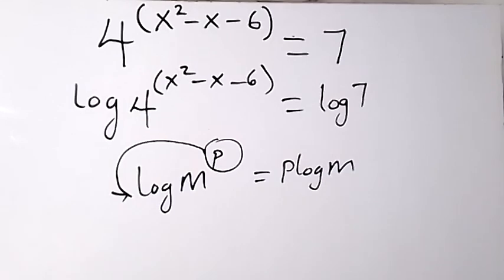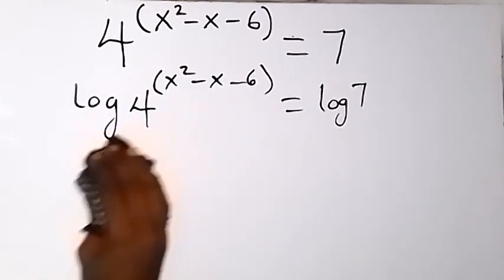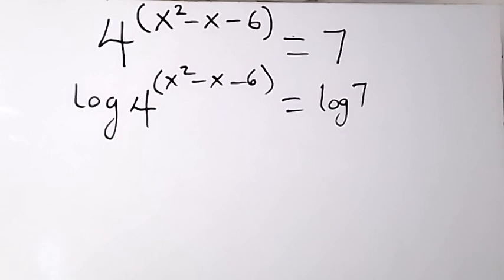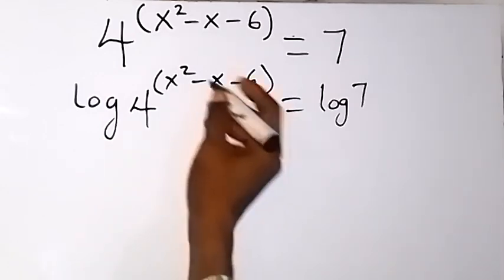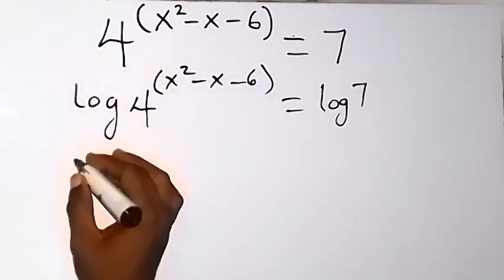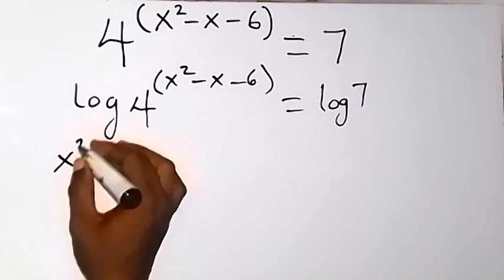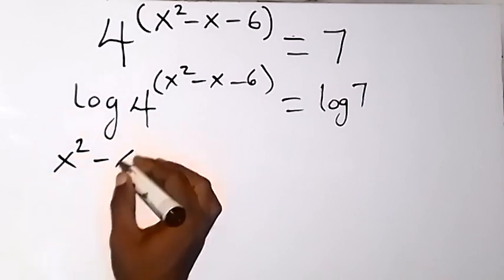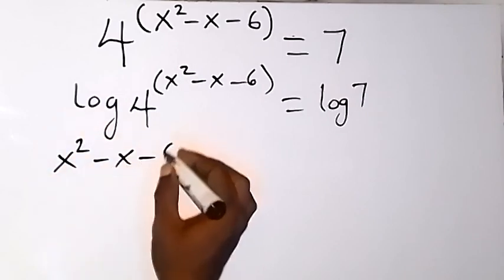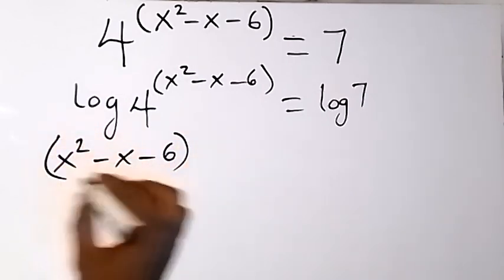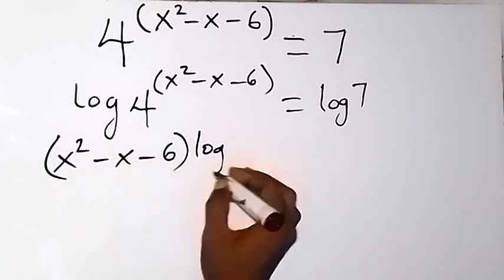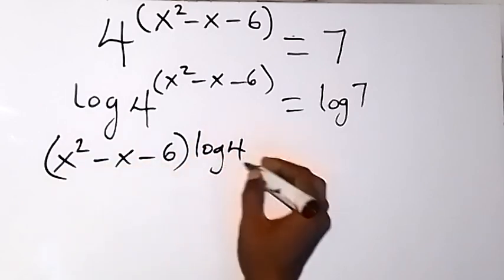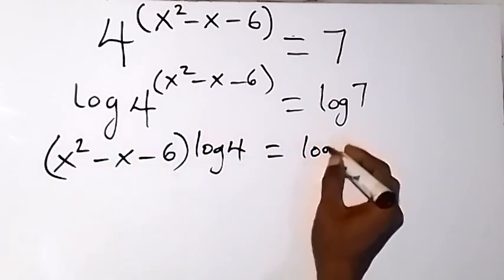When we apply the power law here, this power — that is x squared minus x minus 6 — can come to the front. So we have x squared minus x minus 6, then log 4, and that will be equal to log 7.